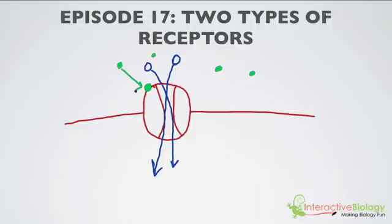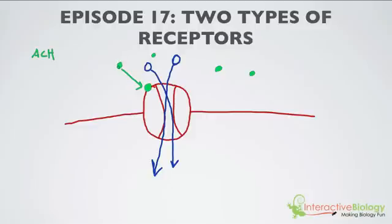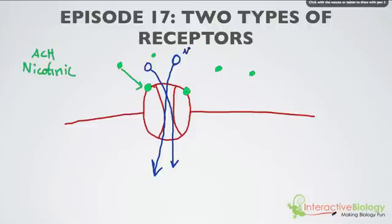Now of course there are going to be different types of neurotransmitters and different types of receptors that act in this way. I'm going to take the example of acetylcholine as a neurotransmitter — ACH — and we're going to call these neurotransmitters acetylcholine. The ionotropic receptor for acetylcholine is called the nicotinic receptor. The reason it's called nicotinic is because this is the receptor that nicotine acts on, and we're going to talk about that in a later episode. So two acetylcholines bind to the nicotinic receptor, and then that causes sodium ions to rush in.